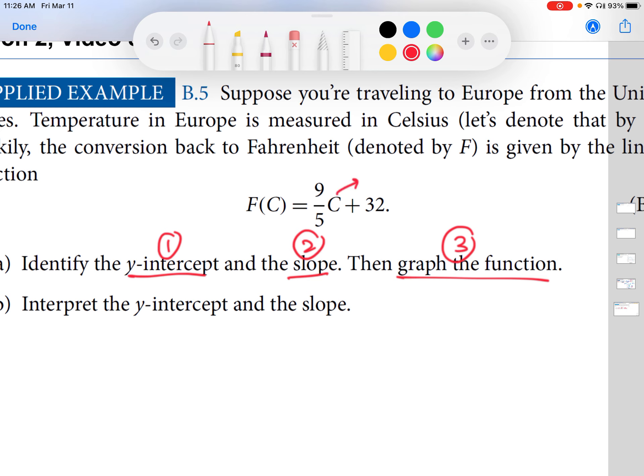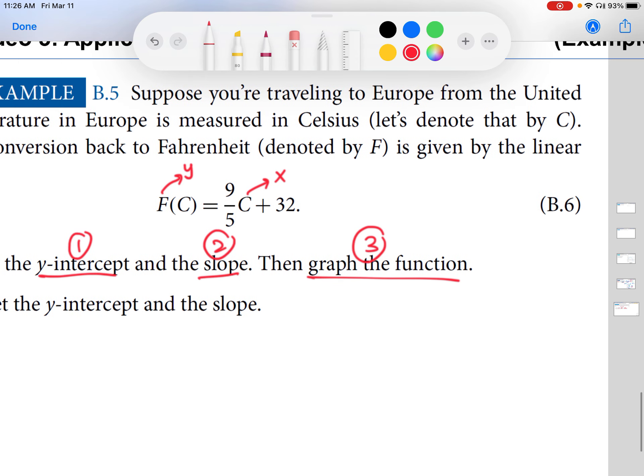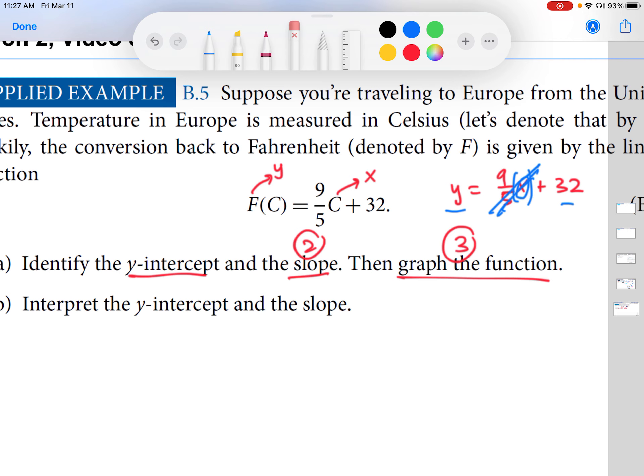In this case, C is like our x. It's our independent variable. F is like our y. It's our dependent variable. So, you can think of this equation as y equals 9 over 5x plus 32. I'm changing variables here just to make it look more like something you've already worked a lot with. Going back to the definition of the y-intercept, if x is 0, then 9 fifths times 0 is 0, then y would be 32. So, that gives us our answer for the y-intercept. The y-intercept is the point (0, 32).